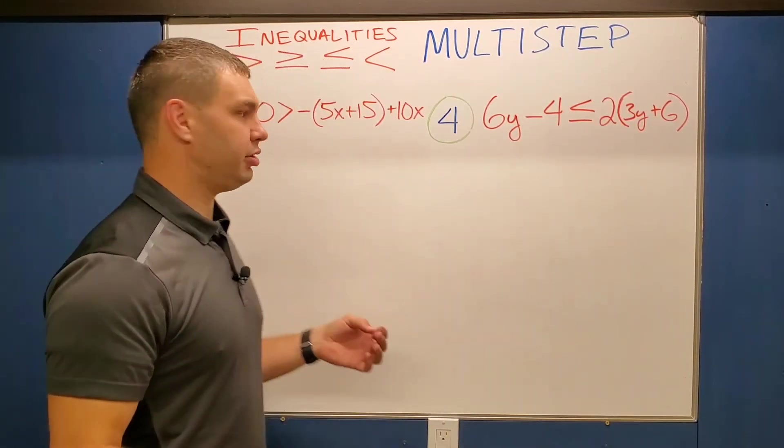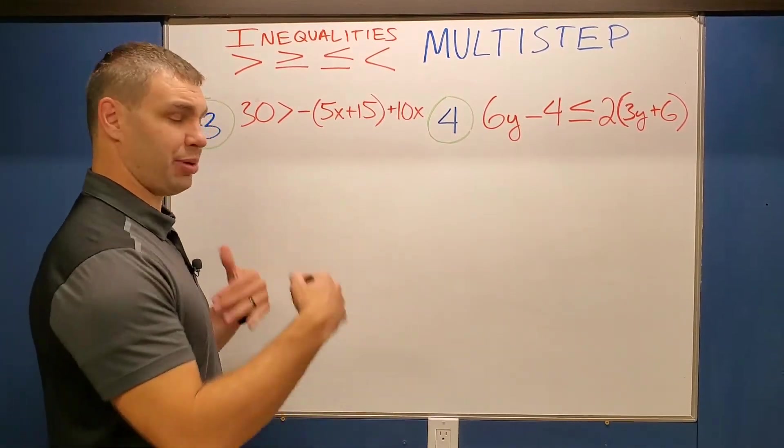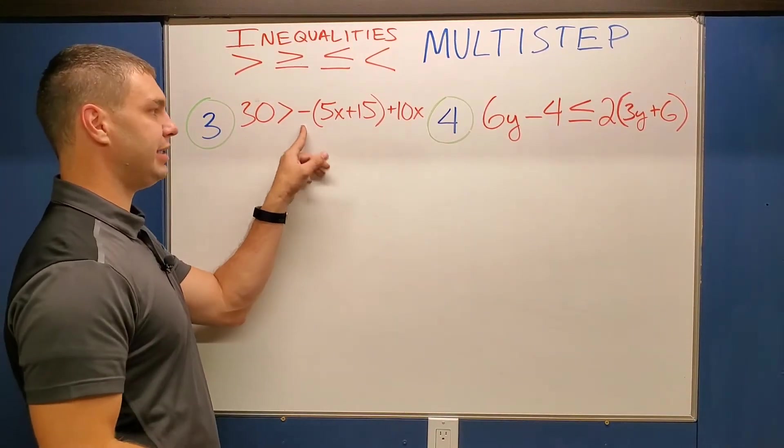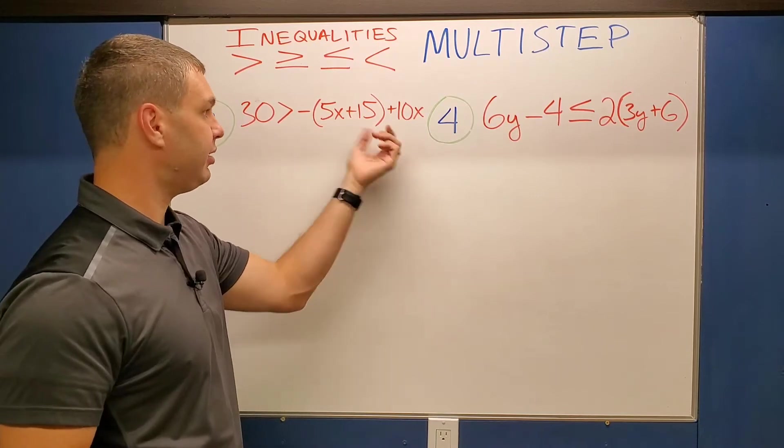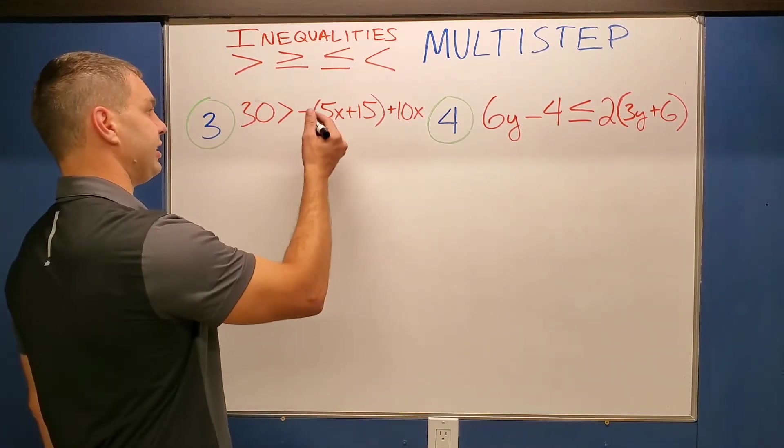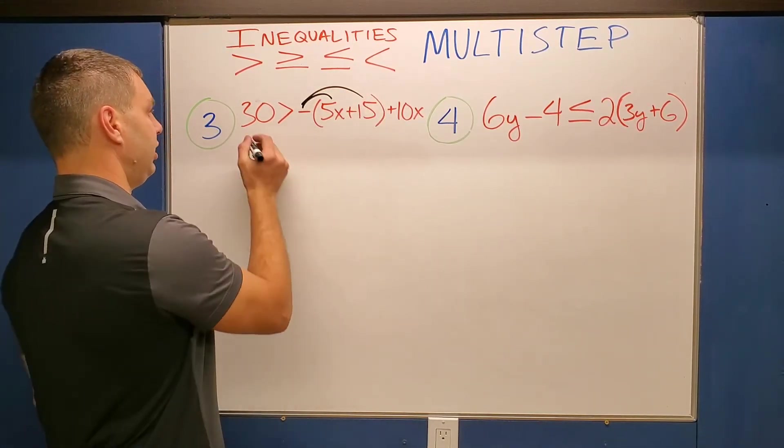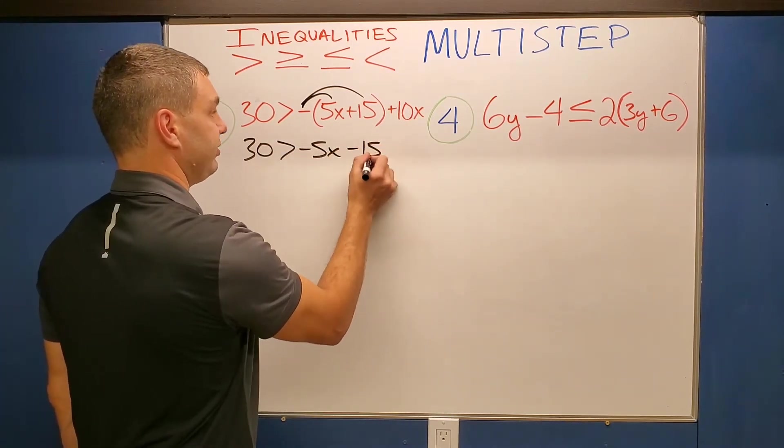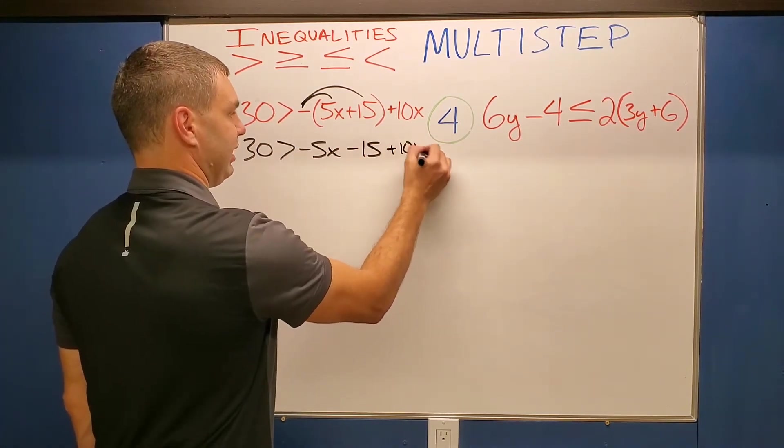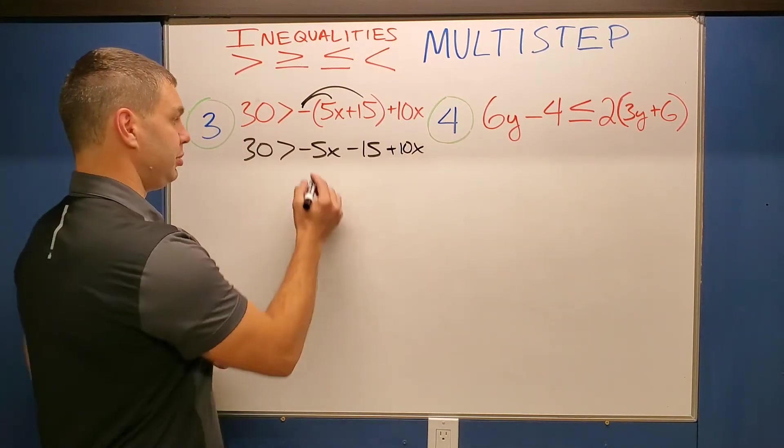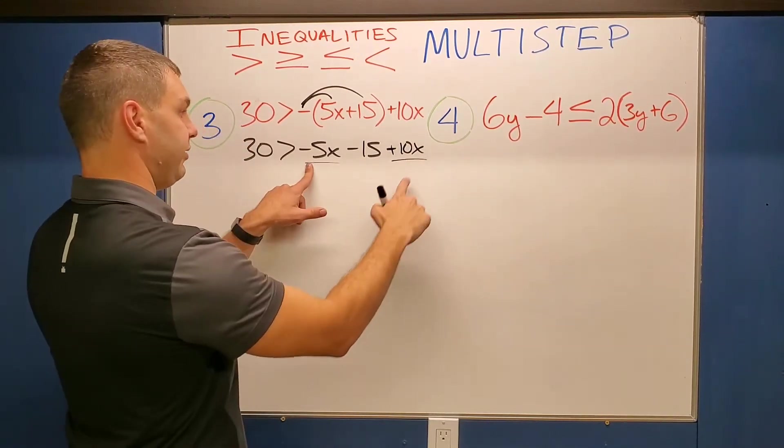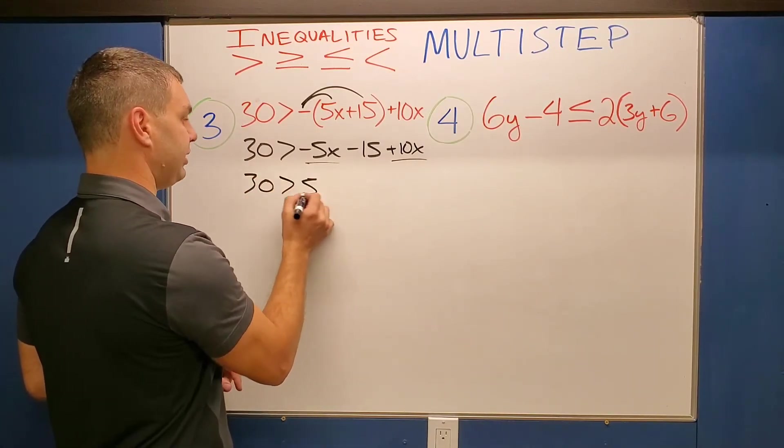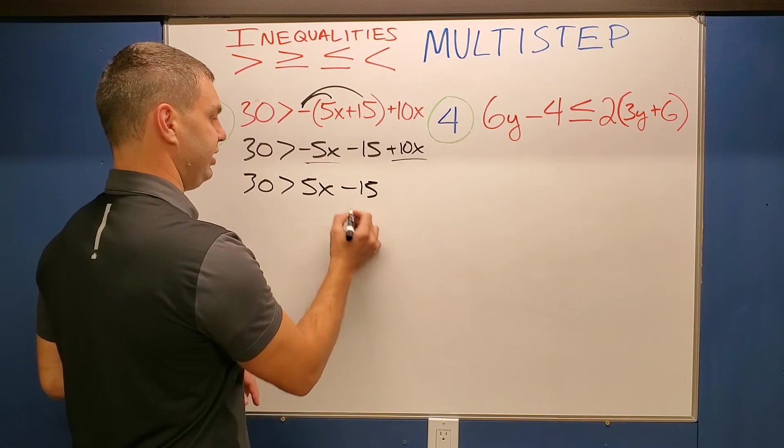All right. These next two that we're going to do have parentheses. All right. And so we'll probably have to distribute into these inequalities. Let's check out this first one. It says 30 is greater than negative times the quantity 5x plus 15 plus 10x. So this negative is like a negative 1 I'm going to have to distribute. So when I do that, I now have 30 is greater than negative 5x minus 15. Then bring down my plus 10x at the end. All right. After I distribute, I can combine like terms probably. And I can. And this one negative 5 plus 10 is going to be a positive 5. So 30 is greater than positive 5x minus 15.